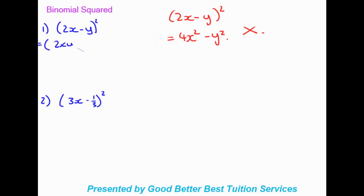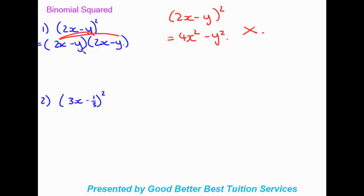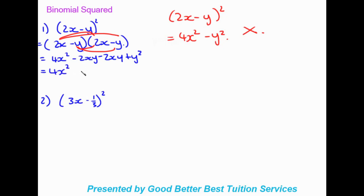So the bracket 2x minus y times another 2x minus y. From a binomial squared we move to a binomial times binomial. Solving as a binomial times binomial: 2x times 2x gives 4x squared, 2x times negative y gives negative 2xy, negative y times 2x gives negative 2xy, and negative y times negative y gives positive y squared. Our final answer is 4x squared minus 4xy plus y squared.